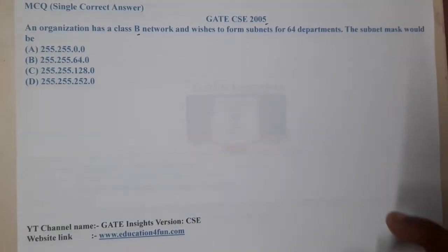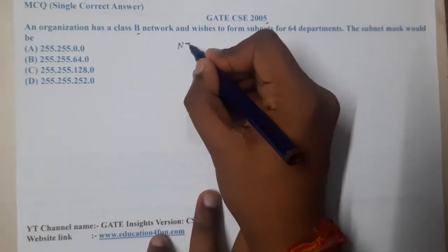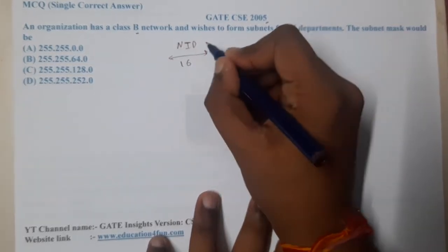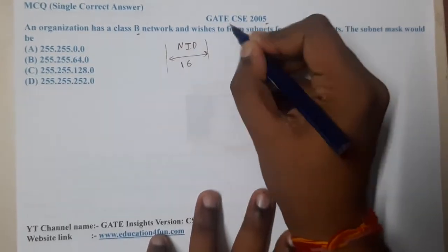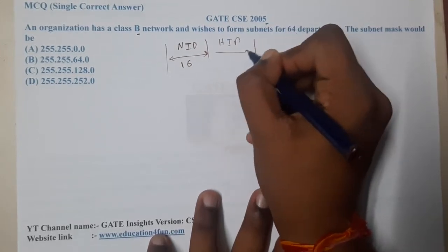Once you hear the Class B word, you should recall what is the number of bits in network ID. It is 16, and what is the number of bits in host ID? It is also 16.